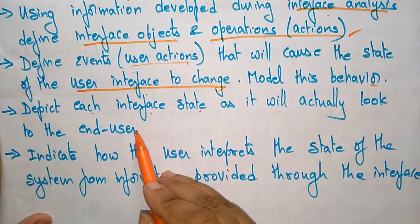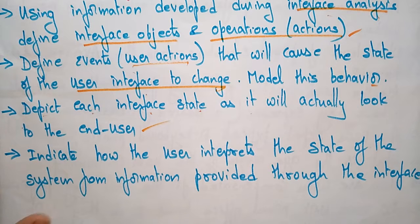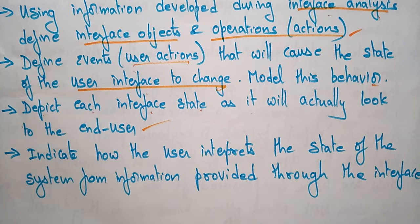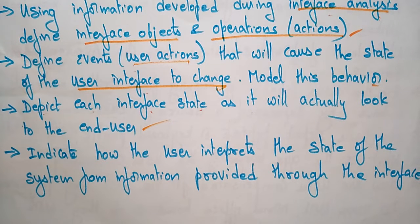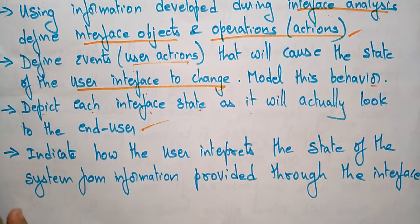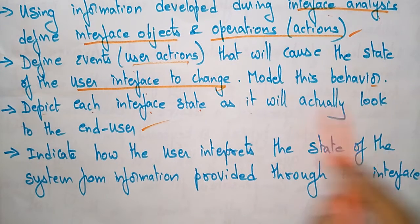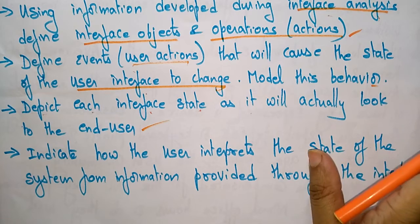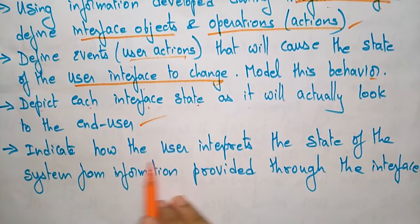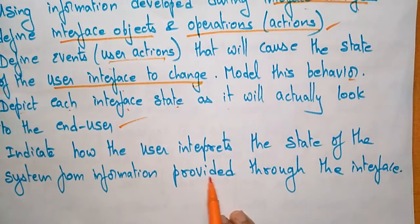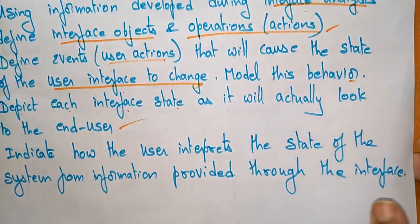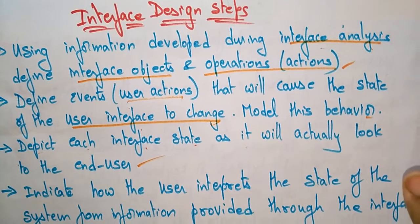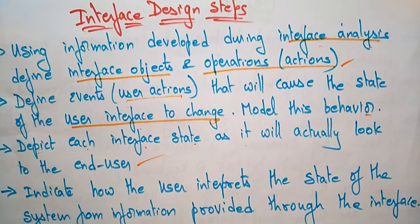Next, depict each interface state as it will actually look to the end user. You have to depict each interface state present in each interface — whether it is an analysis space, user face, or web face. Also indicate how the user interprets the state of the system from information provided through the interface. These are the interface design steps to follow.